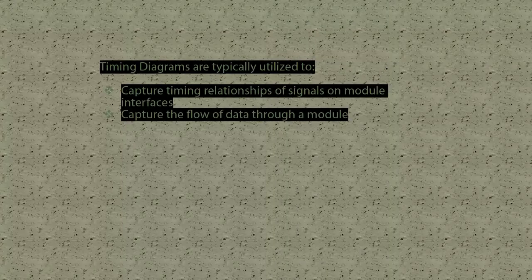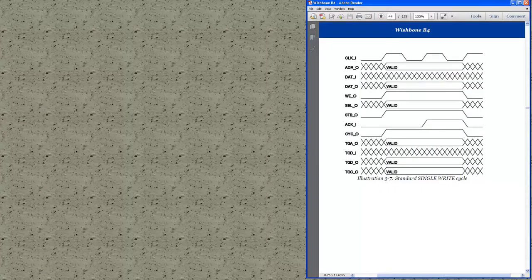Timing diagrams are typically used to show the timing relationship between signals on a module interface, or to show how data is intended to flow through a module. For this demo, I'm going to use the Wishbone SoC Interconnection Architecture Single Write Cycle as my demonstration vehicle. On the right side of the screen, you can see the single write timing diagram from the Wishbone B4 spec.